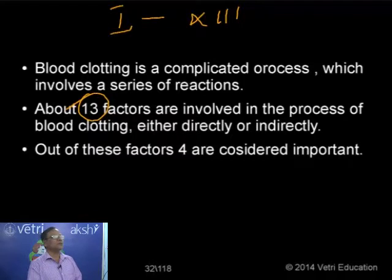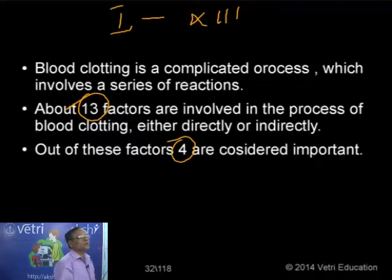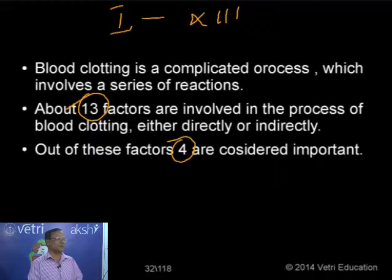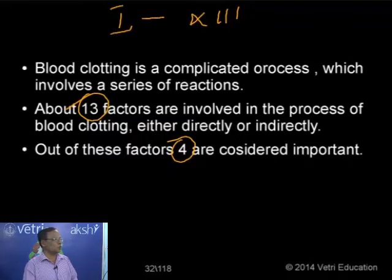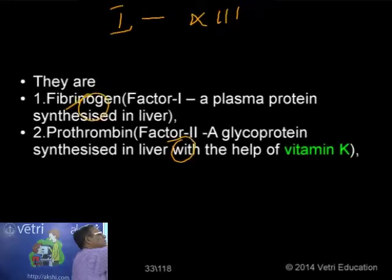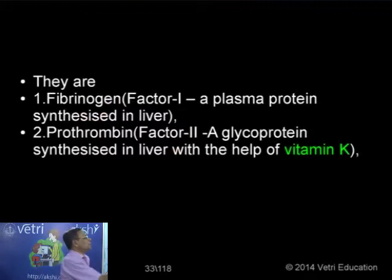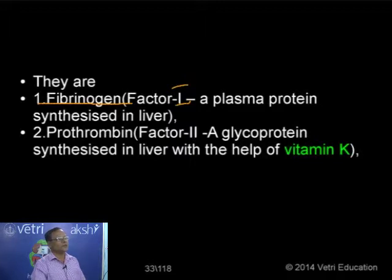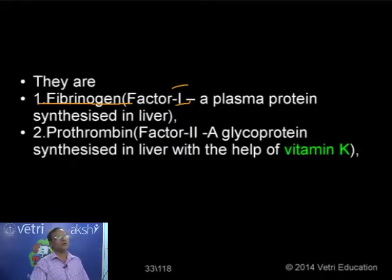Out of these 13 factors, the first four are considered the most important. The four most important factors in the process of clotting: number one is fibrinogen, which is factor number 1. Fibrinogen is a fibrous protein, a plasma protein normally synthesized in the liver but circulating in the blood.